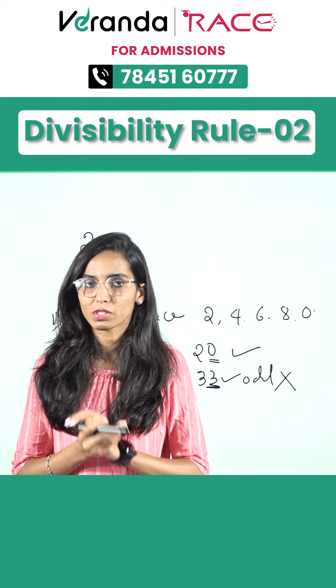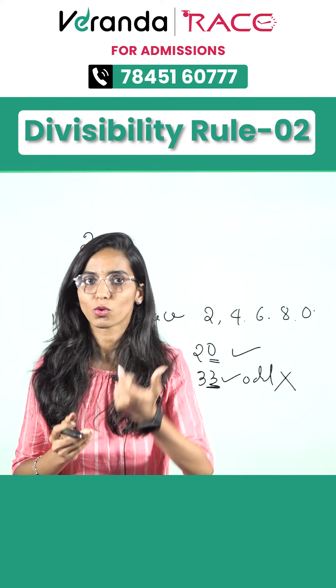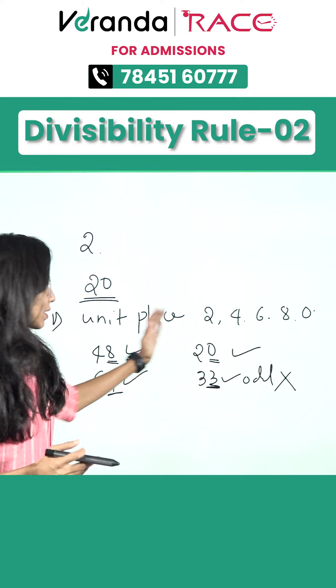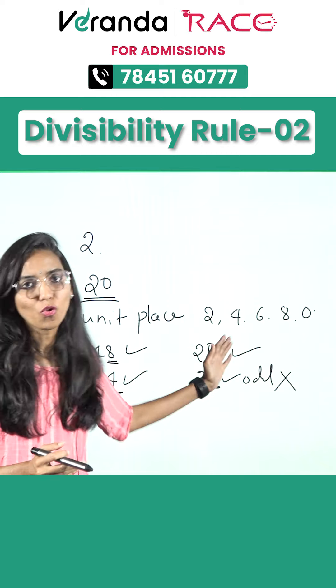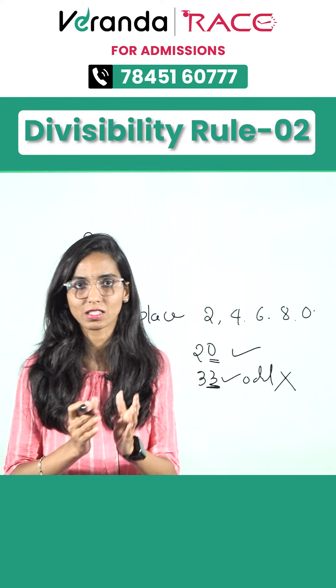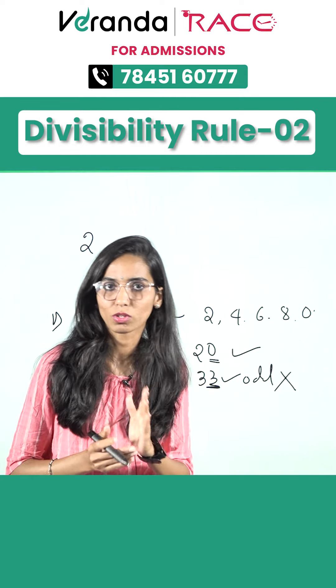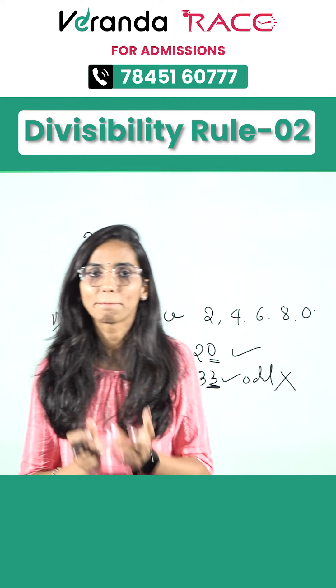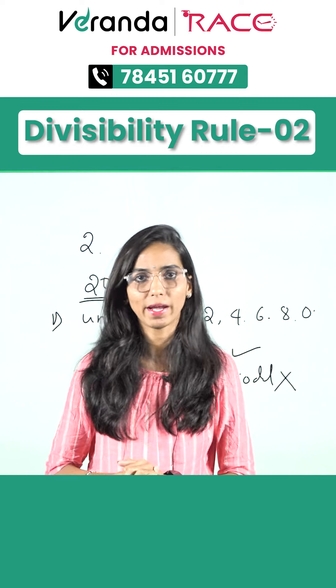So, the divisibility rule for 2: if the unit place digit is 2, 4, 6, 8, or 0, then that number should be completely divisible by 2.